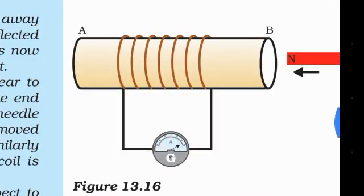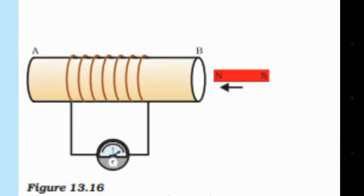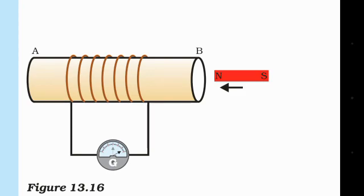Let's see what happened in the previous video about scientists. Scientists have dedicated their lives to learning science — it is a great deal. Let's see the diagram. In this diagram, there is a device called G — G is a galvanometer. You have read electricity; I hope you know what the galvanometer function is. If you don't know, I will show you in the next video.